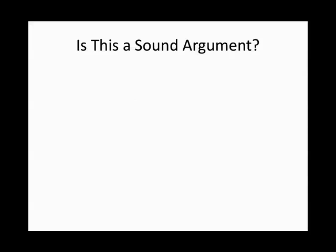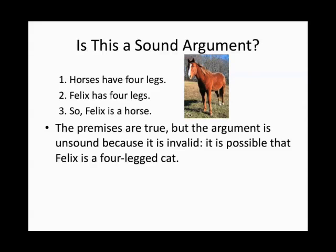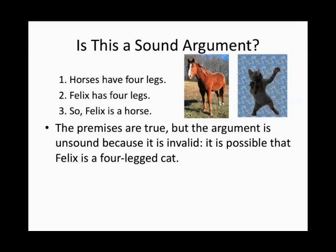Let's take a look at this argument. Horses have four legs. Felix has four legs. So Felix is a horse. It is possible for all these premises to be true, but there's a problem with the argument's form — it's invalid. It's entirely possible that Felix is a cat, which would make the conclusion false.